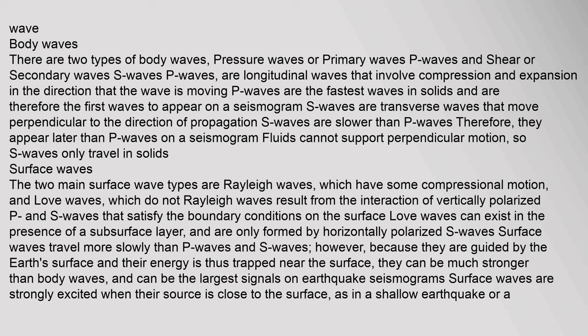There are two types of body waves: pressure (primary) waves — P waves — and shear (secondary) waves — S waves. P waves are longitudinal waves that involve compression and expansion in the direction the wave is moving. P waves are the fastest waves in solids and therefore the first waves to appear on a seismogram. S waves are transverse waves that move perpendicular to the direction of propagation, and are slower than P waves. Fluids cannot support perpendicular motion, so S waves only travel in solid materials.